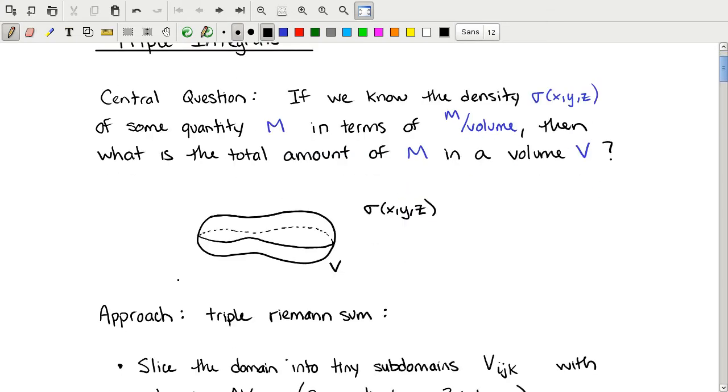For instance, we could have a density function defined everywhere in space and a volume of any shape—it could be this peanut-shaped volume here. We could ask ourselves: what is the total amount of mass enclosed within this peanut-shaped region if the density within that region is given by the function sigma of x, y, and z?